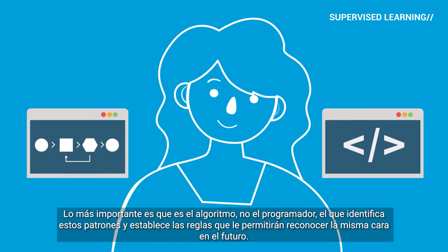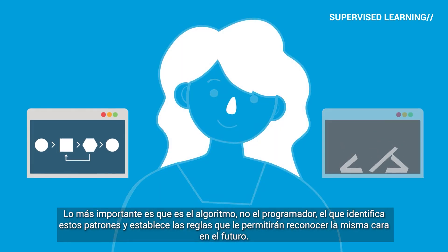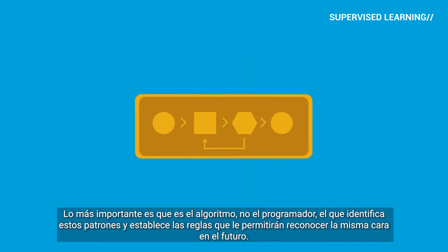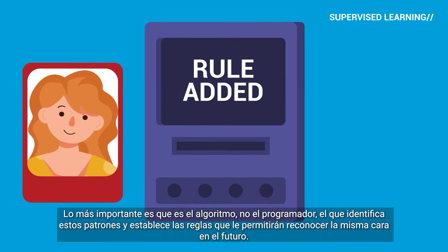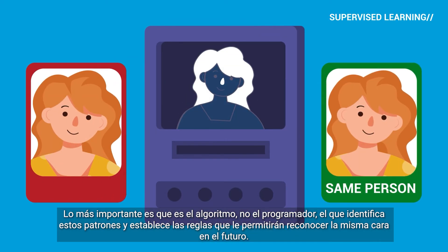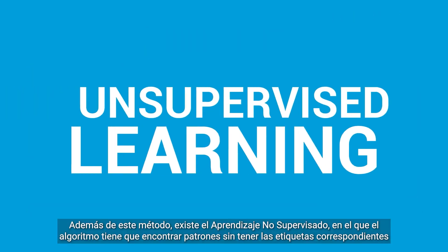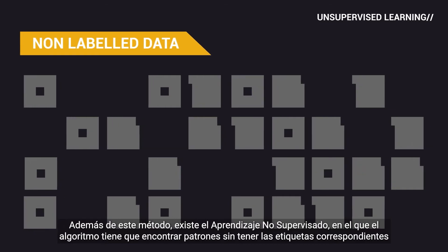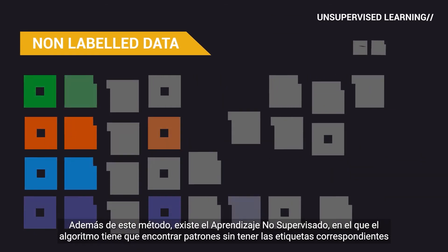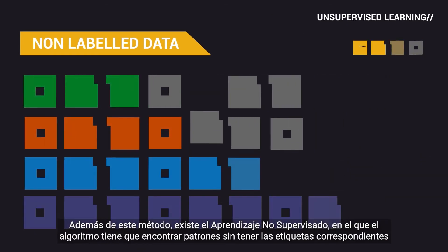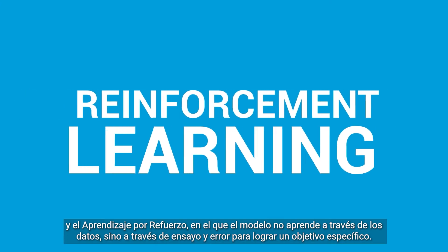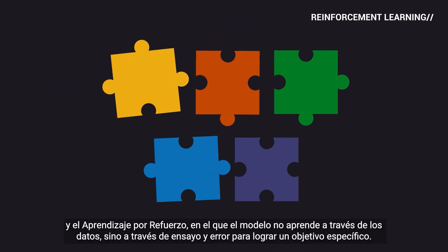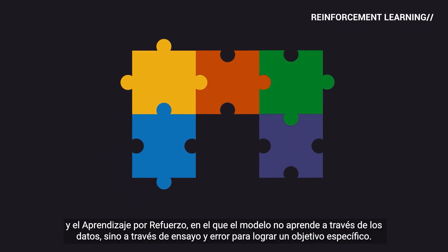Crucially, it's the algorithm, not the programmer, that identifies these patterns and establishes the rules, which will enable it to recognize the same face in the future. Besides this method, there is unsupervised learning, where the algorithm has to find patterns without having the corresponding labels. And reinforcement learning, where the model does not learn through data, but through trial and error to achieve a specific goal.